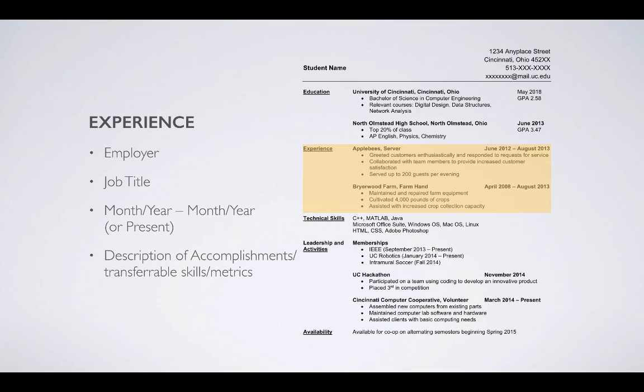Then you have your experience section. Earlier, I talked about creating a professional experience and a relevant experience. But for a simple resume, it's just 'experience' is fine. I threw the Applebee's server information in there. Also worked on the Briarwood Farm. Didn't know what to call that, so I called myself a farmhand. You can call yourself a farm technician, crop technician, whatever you want. The important piece is you're going to put the name of the employer, the job title, and that's for everything you've done. Name of the employer, job title, then the month and year you started to the month and year you ended, unless of course you're still working there and it's to present. Remember, everything goes in reverse chronological order. The thing you're currently doing or finished most recently goes at the top. Description of accomplishments and any transferable skills and metrics go underneath those bullet points.